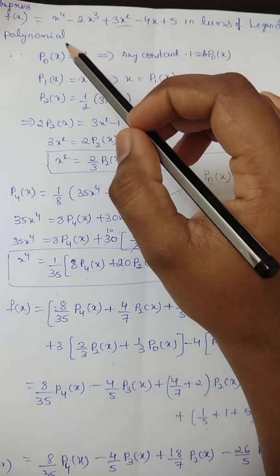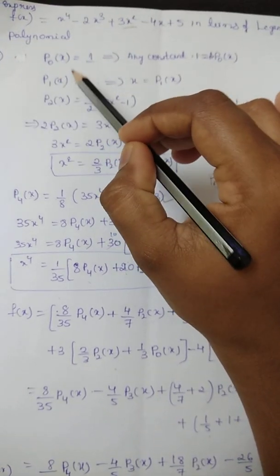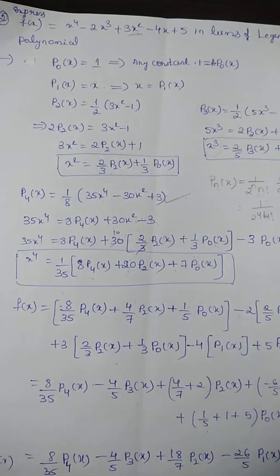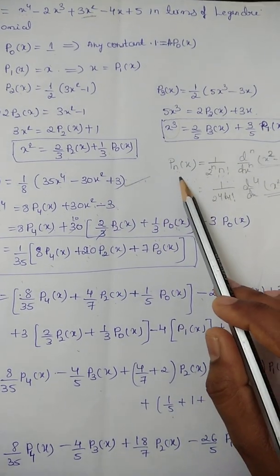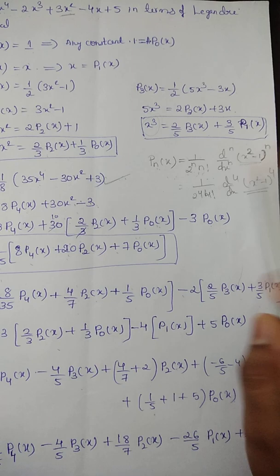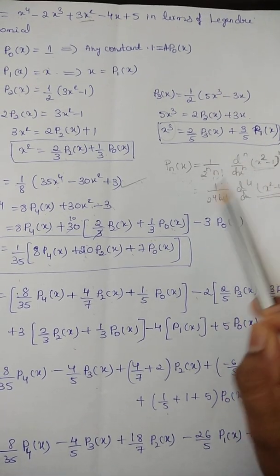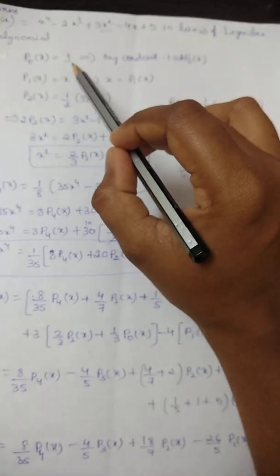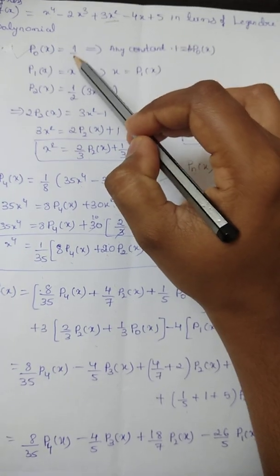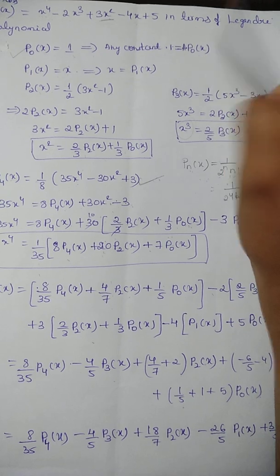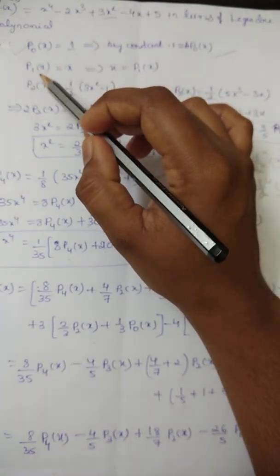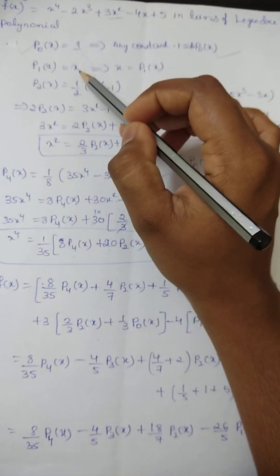How to find these? Now P₀(x) = 1. We get P₀(x) = 1 by using Rodrigues' formula: Pₙ(x) = (1 / (2ⁿ · n!)) · (d^n/dx^n)(x² - 1)ⁿ. When you put n = 0, we get 1. So wherever there is a constant, we can write constant × P₀(x).